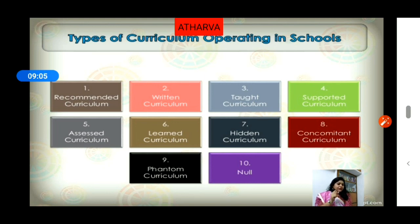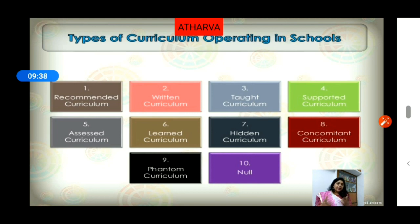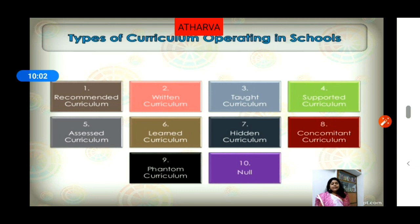Next is concomitant curriculum. This type of curriculum is associated with moral education, value education, religious or cultural values we imbibe from our family. Learners come from various cultures, families, beliefs, and religious mindsets, so they have those impacts on their minds. That curriculum deals with that aspect — learners come from various cultural backgrounds with different values, traditions, and beliefs, and those factors are also working upon their personality alongside the main curriculum.